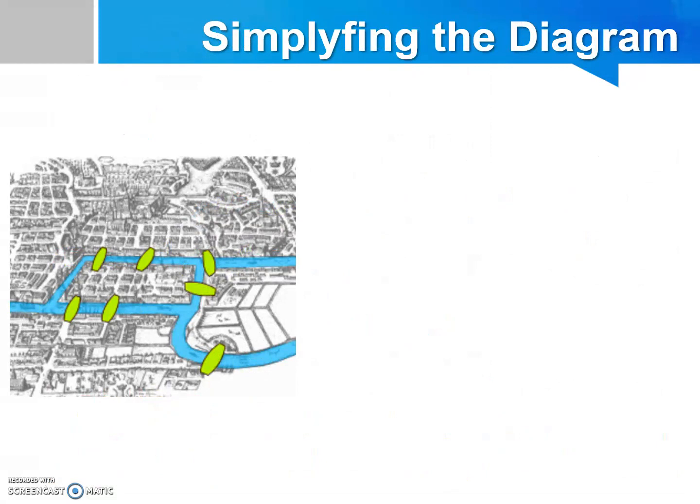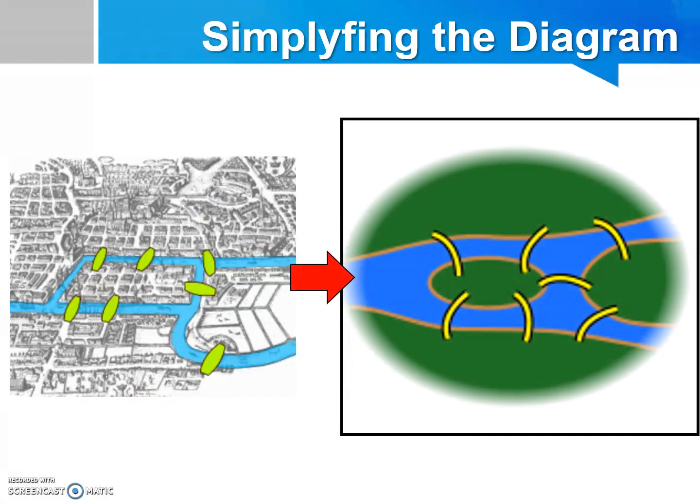To make it easier to visualize the map, let's simplify it together. As we can see here, there are four major parts of land: land A, B, C, and D. There are seven bridges, and we label them as p, q, r, s, t, u, and v that connect the lands together.